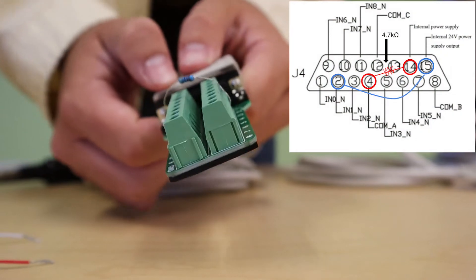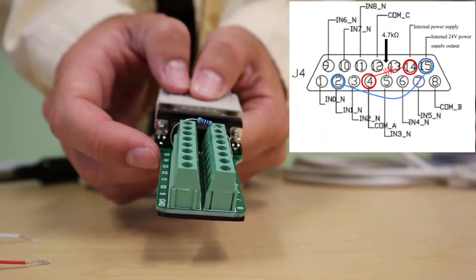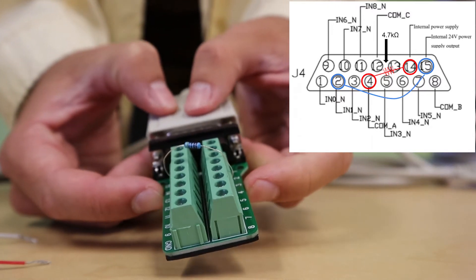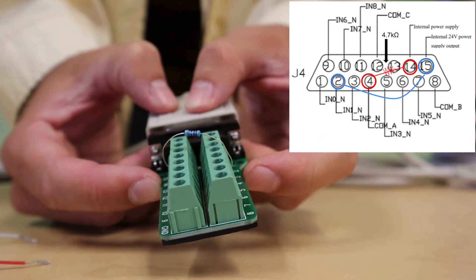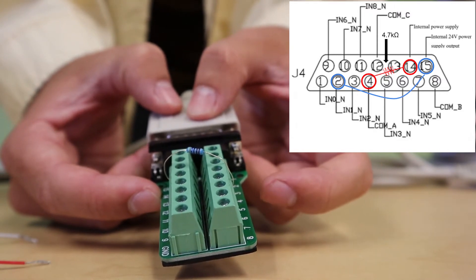We have to do something very similar for the inputs. We have to connect the internal power supply pin, which is pin 14 for the inputs, to our common for the input signals. COM A is pin 4 which relates to input 0, 1, and 2.